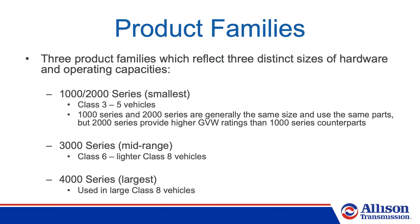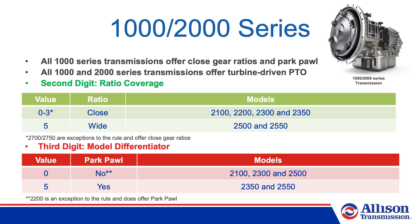There are three product families that reflect three distinct sizes of hardware and operating capacities. The first family is the 1000-2000 series — the smallest family, generally used for class 3 through 5 vehicles. The 1000 and 2000 series are generally the same size and use the same parts, but the 2000 series provides higher GVW ratings than their 1000 series counterparts. The 3000 series is the mid-range family, generally used in class 6 through lighter class 8 vehicles. The 4000 series is the largest on-highway transmission series, used in large class 8 vehicles. All 1000 series transmissions offer close gear ratios, Park Pawl, and turbine-driven PTO.